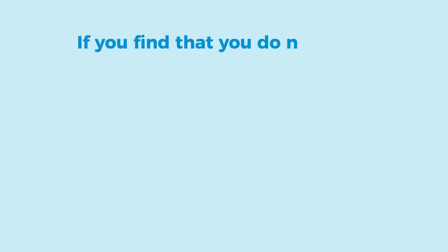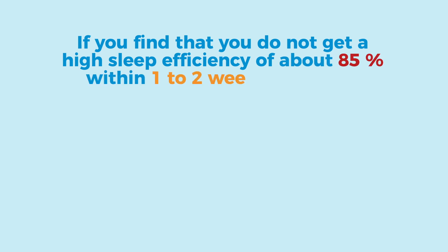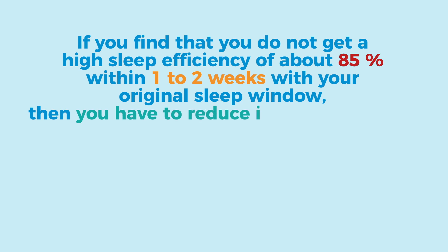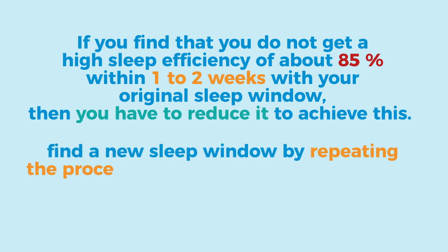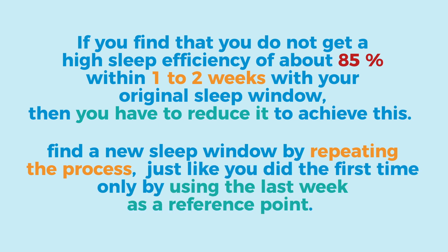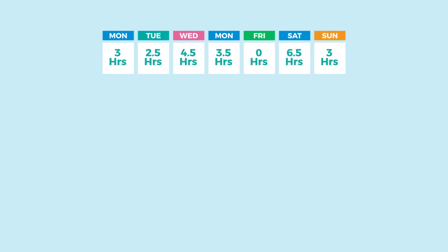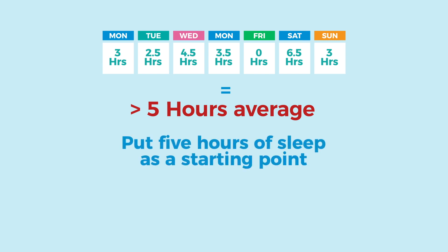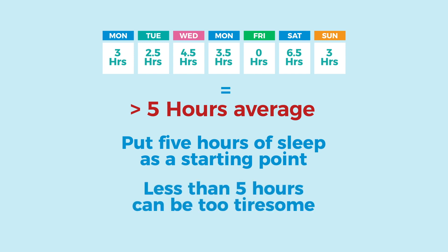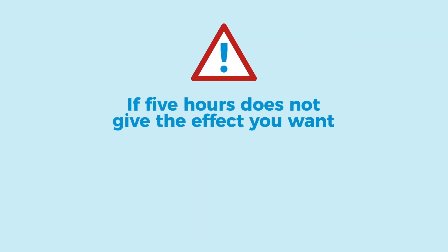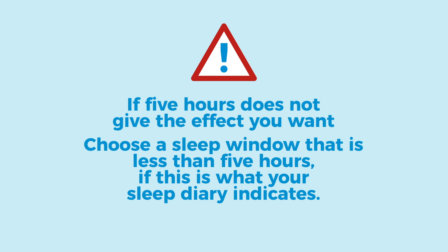If you do not reach a sleep efficiency of around 85% within one to two weeks with your original sleep window, you'll have to reduce it. We recommend finding a new sleep window by repeating the process using the last week as a reference point, making your new sleep window a tougher but more effective one. If your total sleep time is less than 5 hours, it's recommended to use 5 hours as a starting point, as a window shorter than 5 hours can be too tiresome for daily life. However, if 5 hours doesn't give the effect you want and you feel up to it, you can choose a shorter window if that's what your sleep diary indicates.